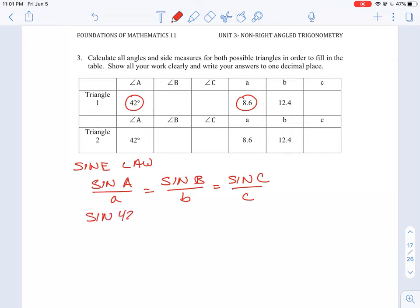So we're going to have sine of 42 degrees all over 8.6. And we're trying to find angle B. So before we can find angle B, we have to figure out what sine B is. So sine B is going to be our unknown and we do know the length of B which is 12.4.